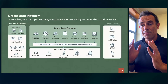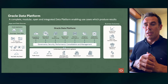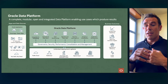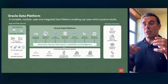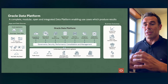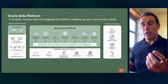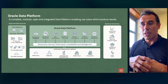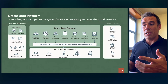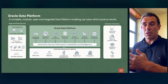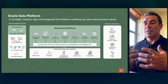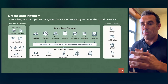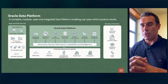The Oracle data platform is a complete, modular, open, and integrated data platform. Complete means you have a full set of services to address any data need. Modular means you use any combination of services as needed — not all of them. Open means you can run open source inside the platform and interoperate using standards with third-party technologies in OCI, other clouds, or on-prem. Integrated means these services are pre-integrated with each other.